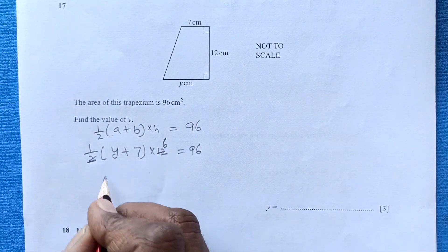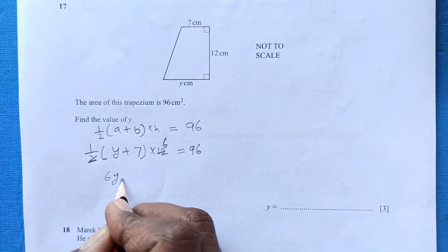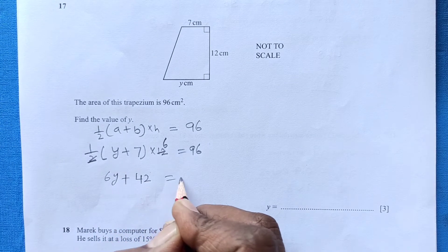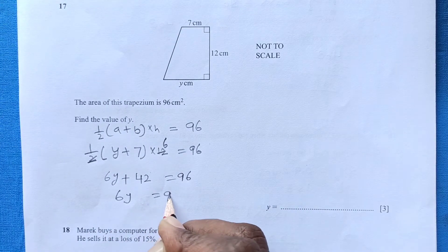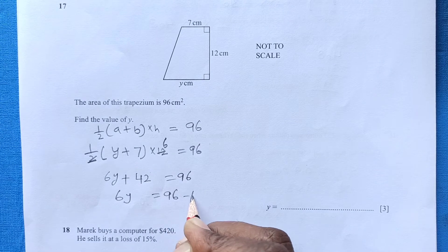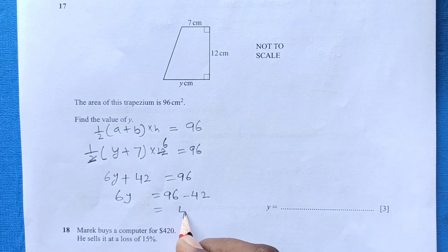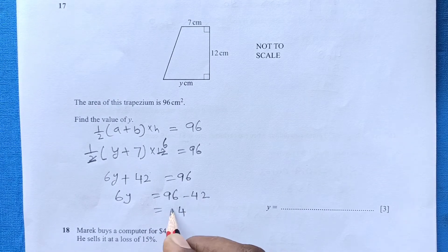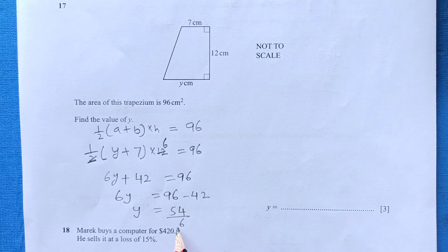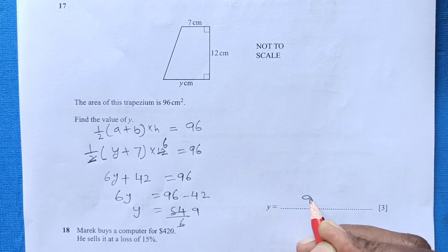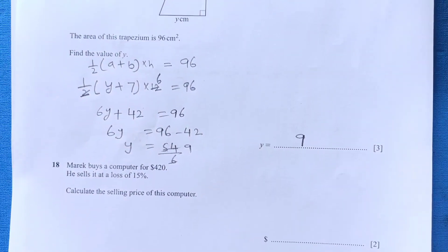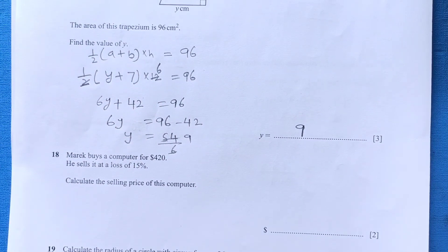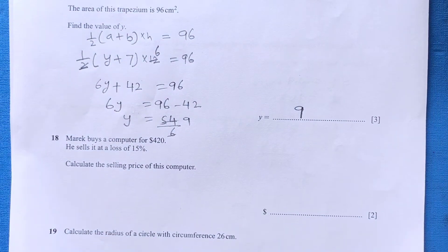Simplifying: 2 cancels with 6, giving 6y + 42 = 96. So 6y = 96 − 42 = 54, therefore y = 9.